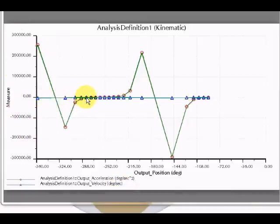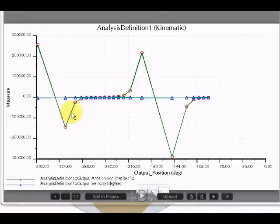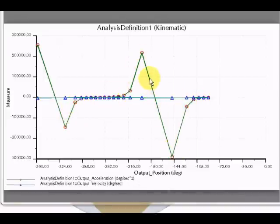The blue is the output velocity and the green is the output acceleration. This graph is plotted with respect to velocity with respect to the acceleration.